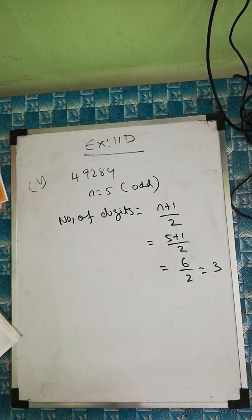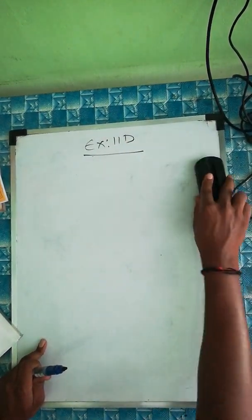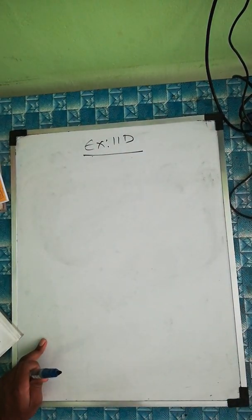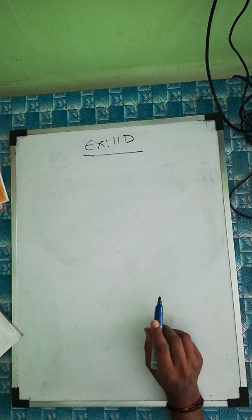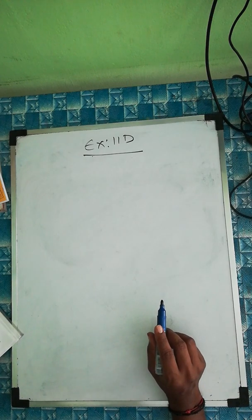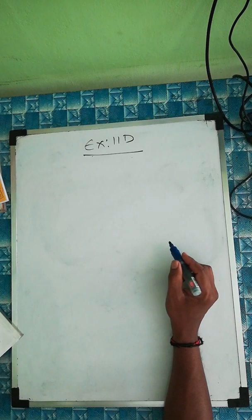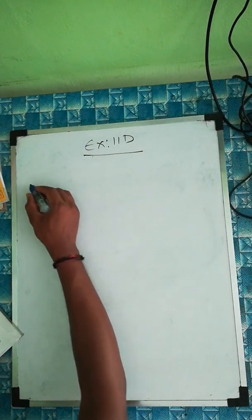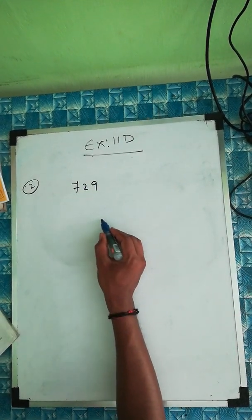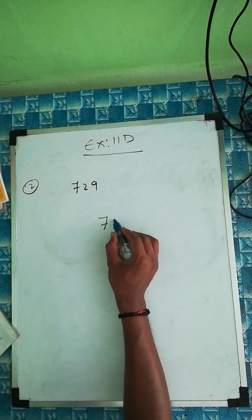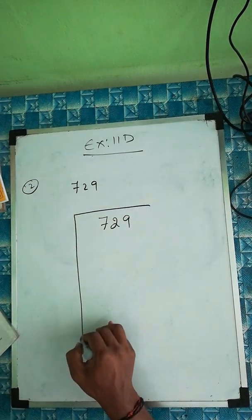Question number two uses the long division method — a very important method for higher classes. For example, using prime factorization is fine for smaller numbers, but for very large numbers or decimal numbers, we use the long division method. For instance, finding the square root of 64 is easy — it's 8. But for bigger numbers, the long division method is the easier way. The first question here is 729. Write it out like this.